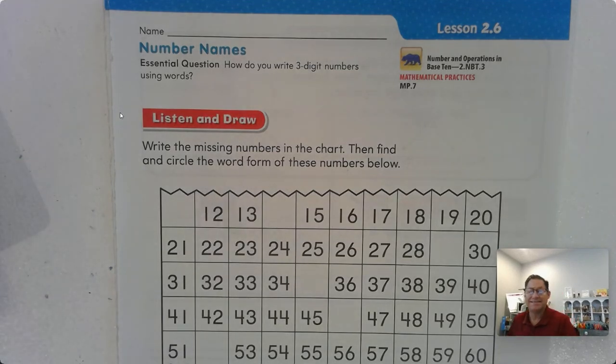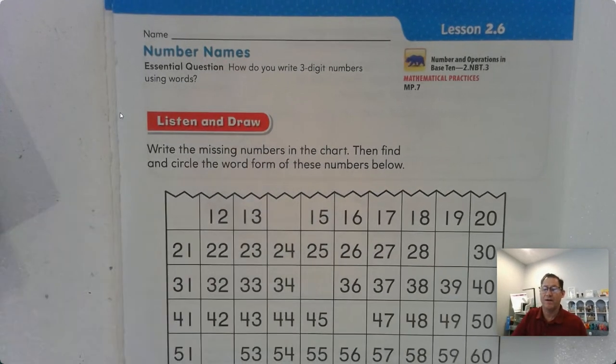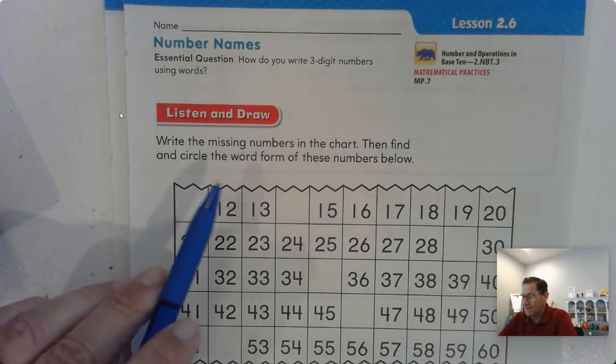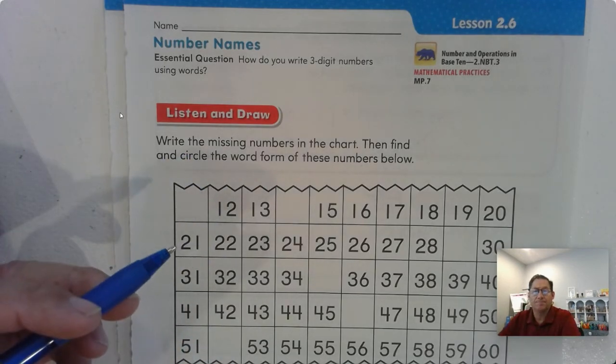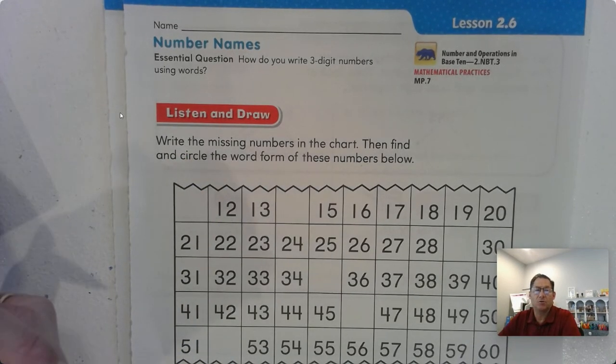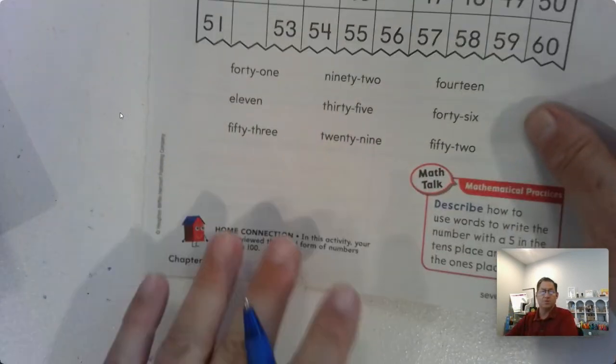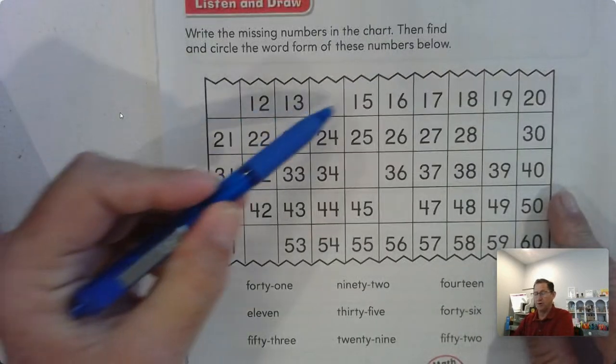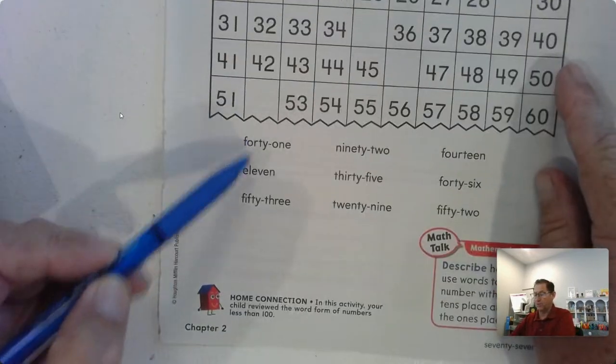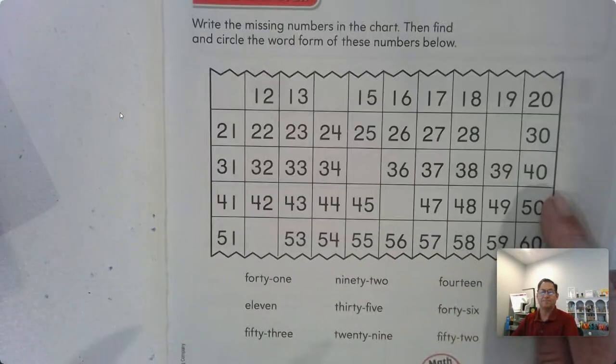We're on page 77 of the second grade GoMath textbook. Write the missing numbers in the chart, then find and circle the word form of these numbers below. We're going to fill in the blanks in the chart and then circle the numbers that we write.